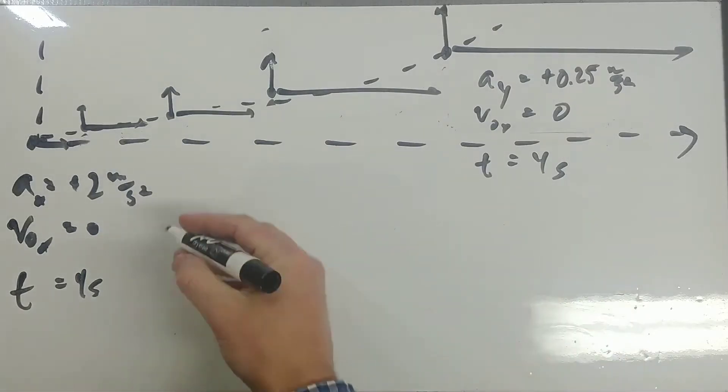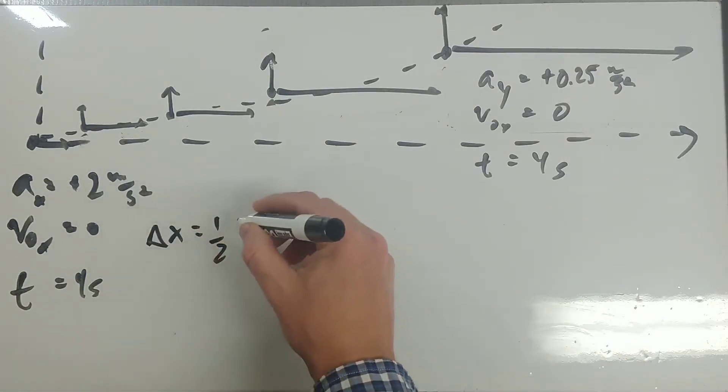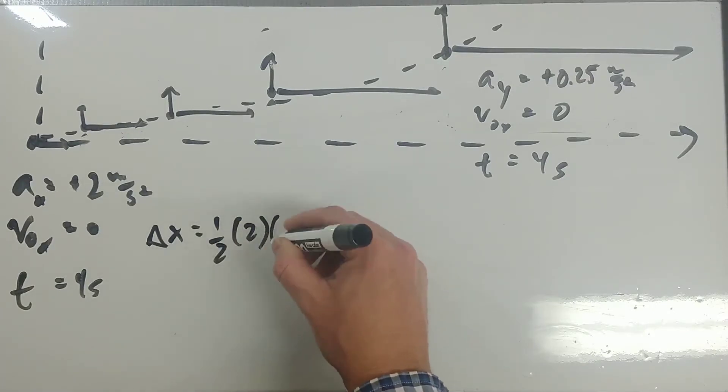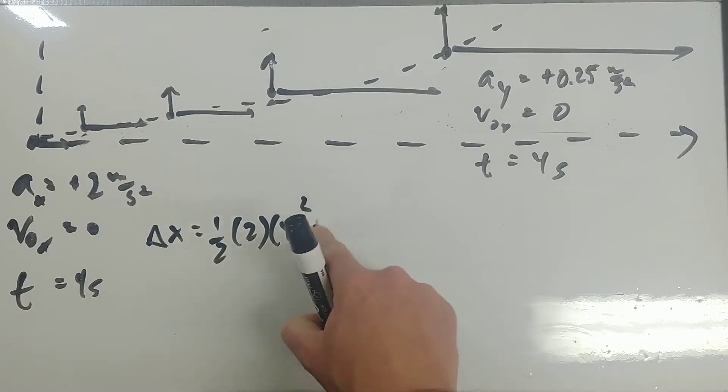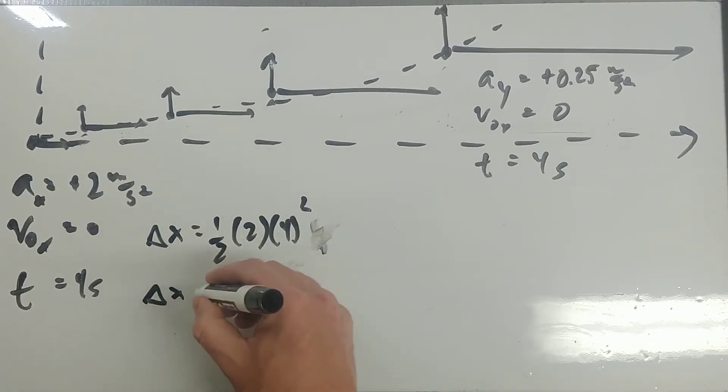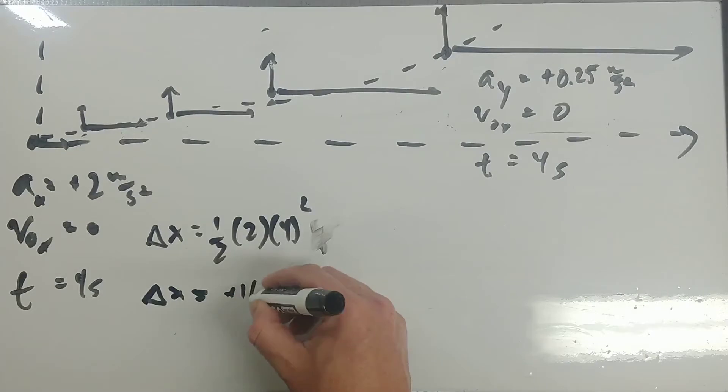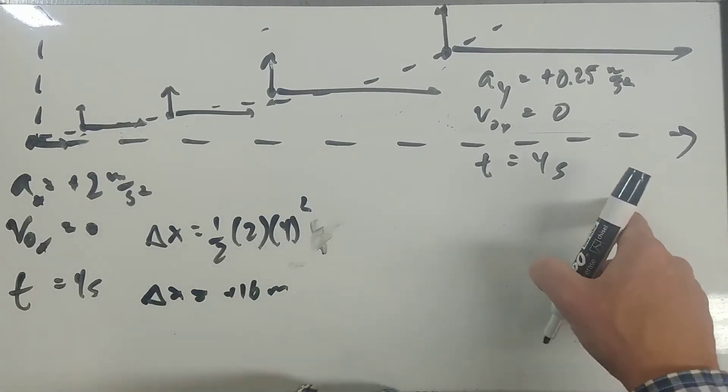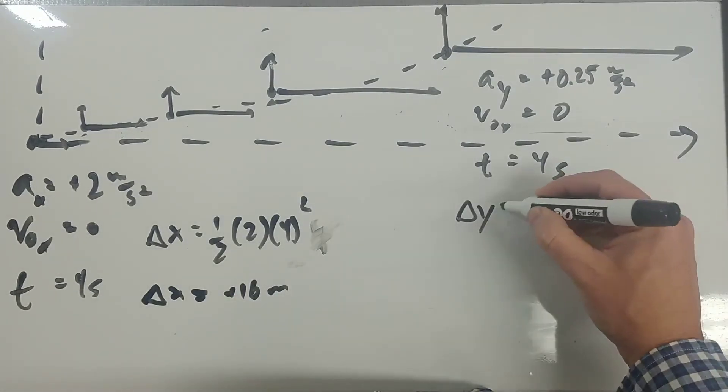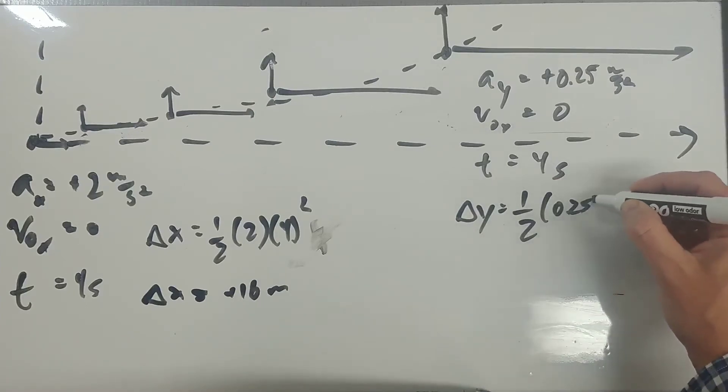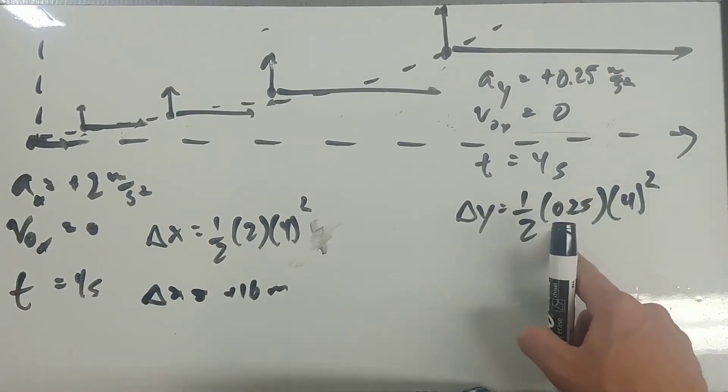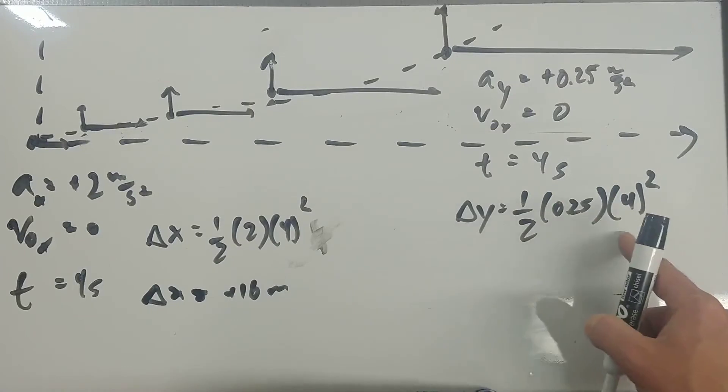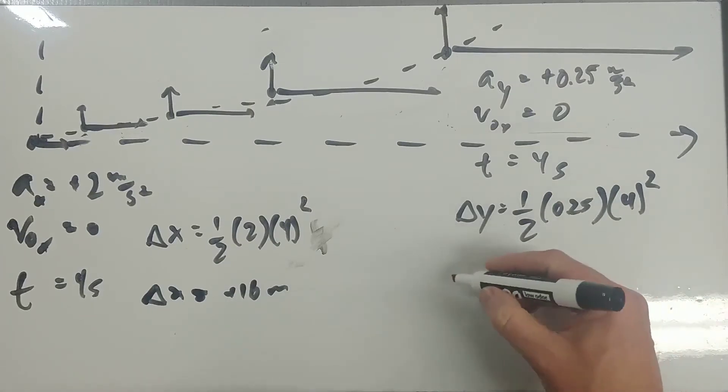Delta X was one half of 2 times 4 squared plus V naught T, which is 0, so 16. Delta X would be positive 16 meters. Delta Y, one half of 0.25 times 4 squared, so 16, quarter of 16 is 4, half of 4 is 2. So Delta Y would be plus 2 meters.